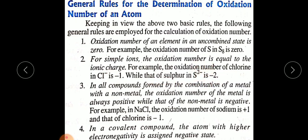Rule 3: In all compounds formed by the combination of a metal with a non-metal, the oxidation number of the metal is always positive while that of the non-metal is negative. For example, in NaCl (sodium chloride), the oxidation number of sodium is plus one and that of chlorine is minus one.